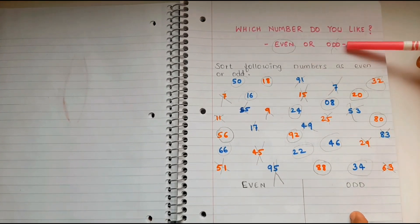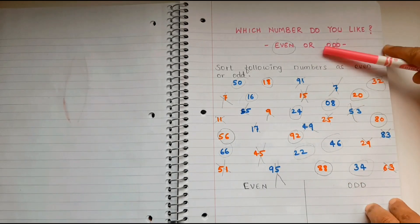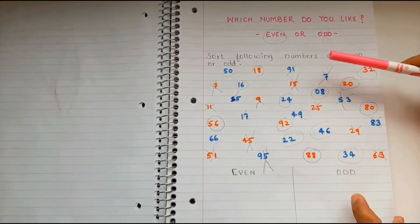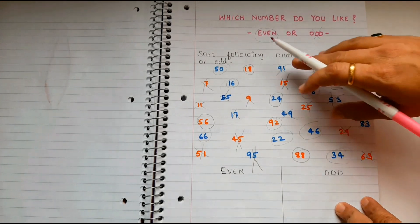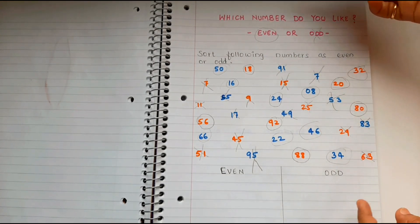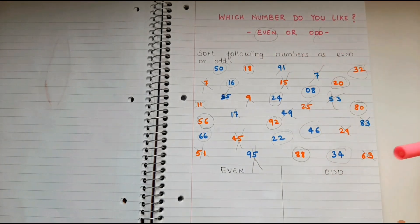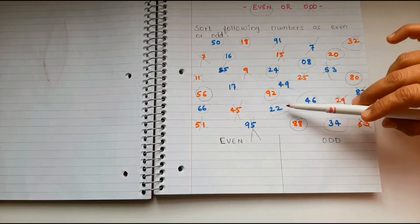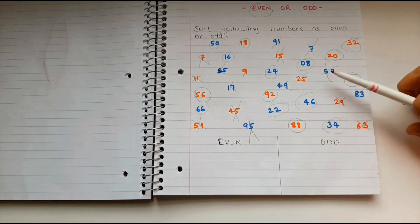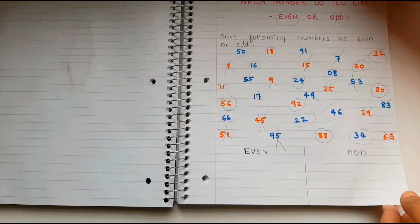Next is even or odd. They have already learned even and odd in kindergarten and first grade. Here we're just revising — sort the following numbers as even or odd. My daughter always asks me which numbers I like, even or odd, so in the same way I asked her. She circles the even numbers and crosses out the odd numbers. Then she writes the even numbers in one column and the odd numbers in another.